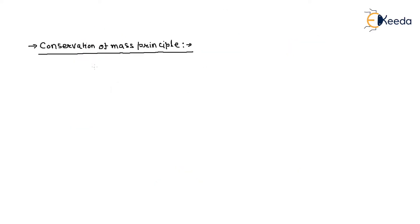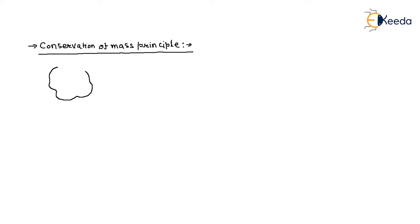First of all, what is the principle of conservation of mass for a system? If this is your control volume system, this is our control surface — the boundary of a control volume is called the control surface. If there is mass entering and somewhere there is mass exiting out from the control volume.